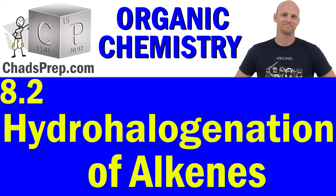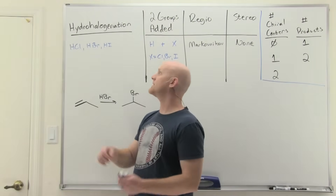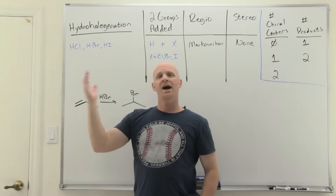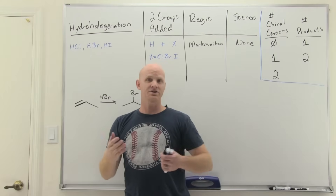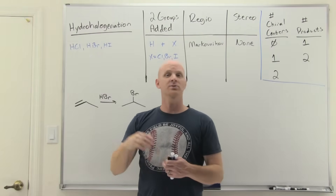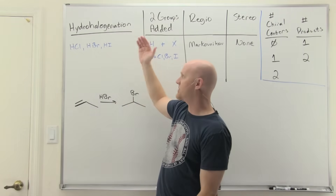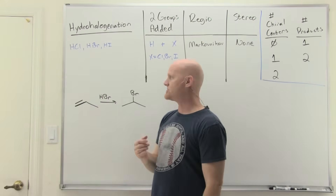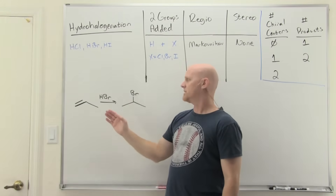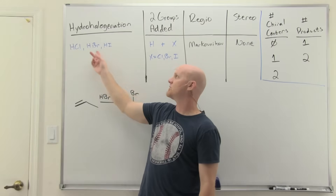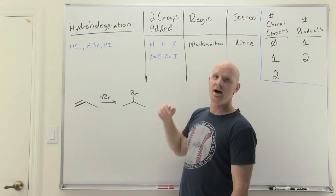The first alkene addition reaction we're looking at is hydrohalogenation, where we add a hydrogen and a halogen across the alkene. You may recall from elimination reactions that dehydrohalogenation is the exact opposite — you lose a hydrogen and a halogen to form an alkene. Here, instead of forming an alkene we're consuming one and forming two new sigma bonds. The reagents are HCl, HBr, or HI.